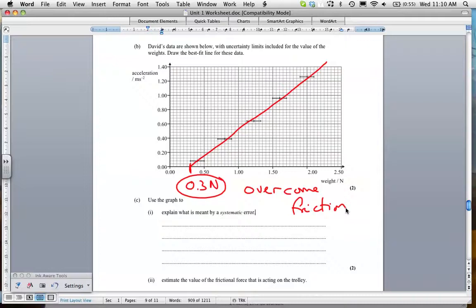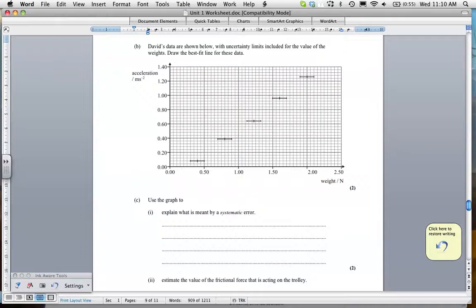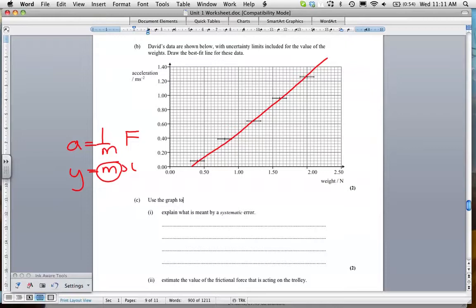Now, the question goes on to ask, estimate the mass of the trolley. Again, I've got to redraw this thing. As I said, we've got this situation that A equals 1 over M times F. Now, if I compare that to Y equals MX, we can see that your slope, this is the slope, or the gradient, depending on which term you like to use. The slope of the gradient of this graph is actually going to equal 1 over M.